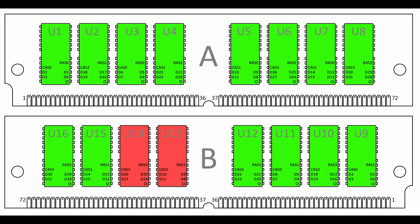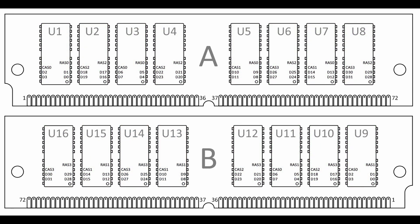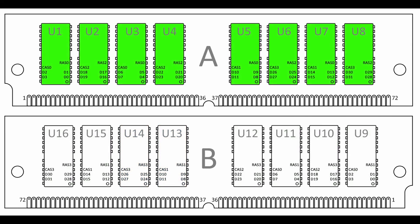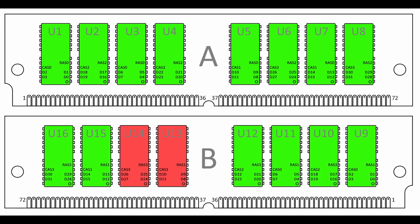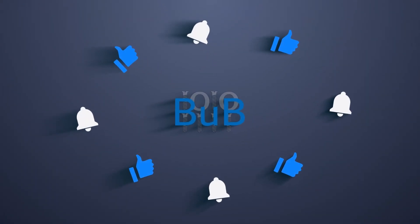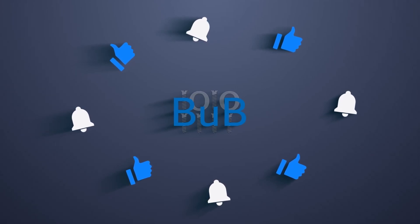Now, let's go back to my previous video and listen to my prediction. If I had an option to rank the chips on likelihood of being faulty, my order would be: U6, U5, U14, and finally U13. We already figured out that side A does not contain the faulty chip. Therefore, it cannot be U6 or U5. The remaining chips are U14 and U13. At least the faulty chip was shortlisted in my second video, so maybe this fact deserves your thumbs up for this video?